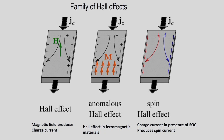This is a cartoon of the family of Hall effects. On the left is the usual Hall effect: a current is sent in one direction, a magnetic field is perpendicular to the plane of the sample, and positive and negative charges separate giving rise to a Hall voltage measurable by a voltmeter.